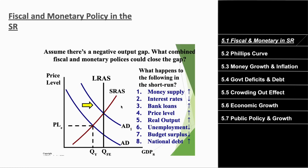We can do the same thing with an inflationary gap, but instead we use contractionary fiscal and contractionary monetary policy. When we use expansionary monetary and expansionary fiscal policy, our money supply increases, interest rates decrease because of our three different levers, bank loans increase, the price level increases, real output increases because you're expanding the economy, unemployment decreases because of economic growth, the budget surplus decreases, national debt increases, and inflation increases as well.